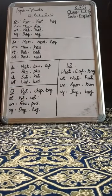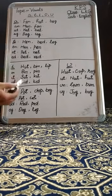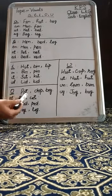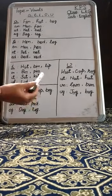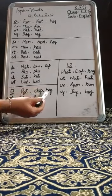Now another vowel is O. The sound of vowel O is 'O'. For example: Pot, Dog, Boy.